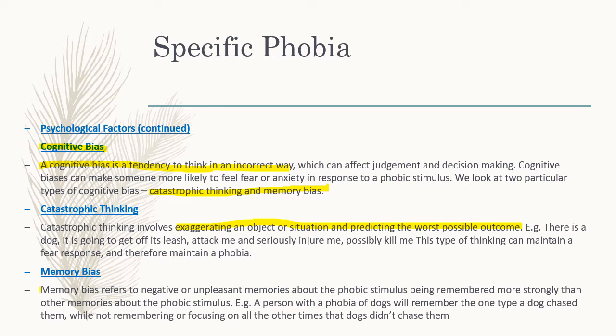Memory bias is the second type of cognitive bias, where negative or unpleasant memories about the phobic stimulus are remembered more strongly than other memories. For example, if you have a phobia of dogs, you might remember the one time a dog chased you and not remember the thousands of other times a dog didn't chase you. Similarly with spiders — you might only remember the time a spider bit you or crawled on you, but not all the other times.